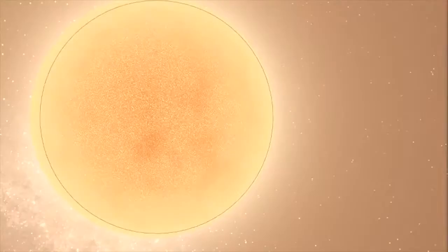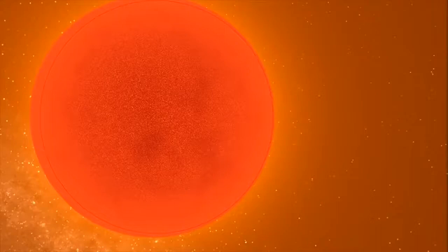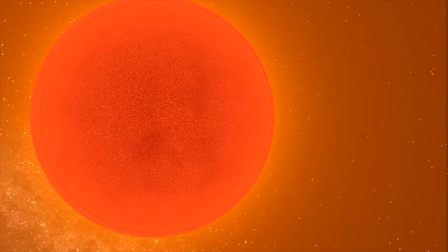When the helium runs out, the star's core shrinks as the star's outer layers get bigger. This makes the star larger, brighter, and cooler, making it a red color. Our sun was destined to become a red giant as soon as it was created.